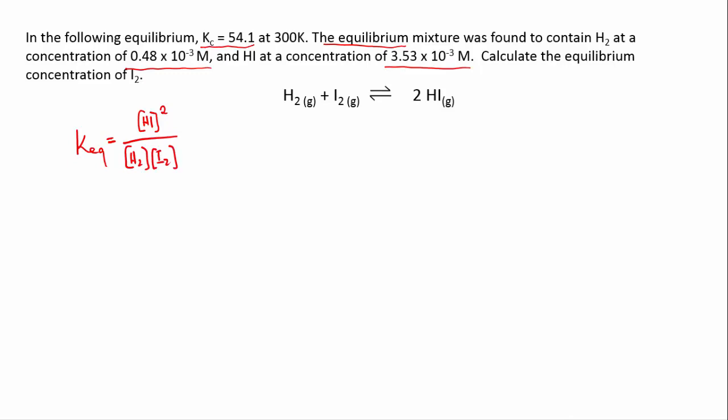So again your first step should be to write down the equilibrium expression. Now all we have to do: we know Kc or Keq, we know the concentration of hydrogen, we know the concentration of hydrogen iodide, we just have to substitute in and rearrange to get the concentration of iodine.